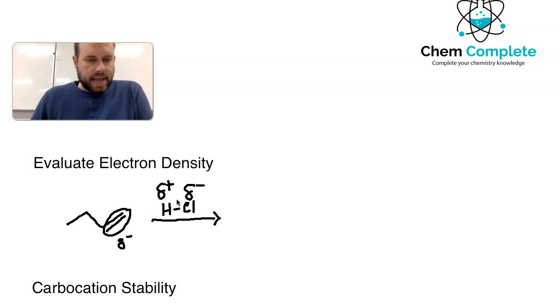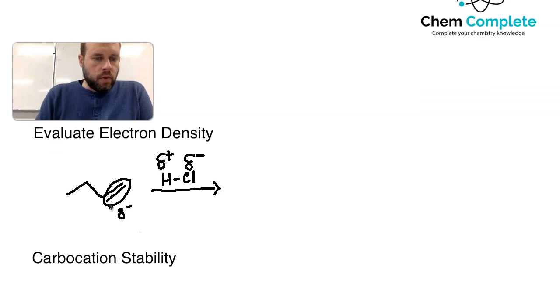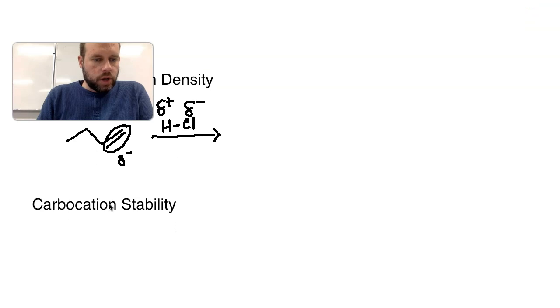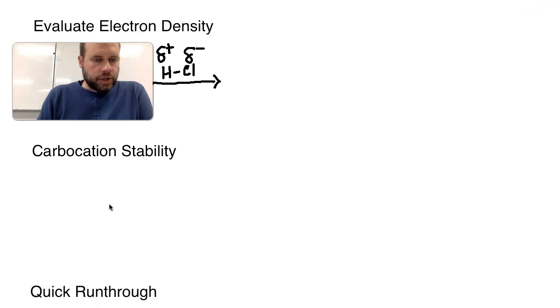We are going to be able to send the pi electrons out to the hydrogen, and then that shared bond will go to the chlorine, which is more electronegative. That's the mechanism we'll be coming up on here. But now that we've evaluated that for electron density, we also want to talk about carbocation stability, because we're going to find that a carbocation will occur in this reaction.